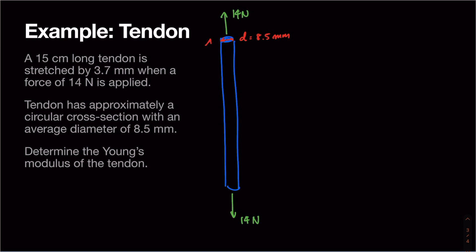The length of the tendon is 15 centimeters. When we apply this force, the tendon gets 3.7 millimeters longer, so our change in length is 3.7 millimeters. We want to find the Young's modulus.